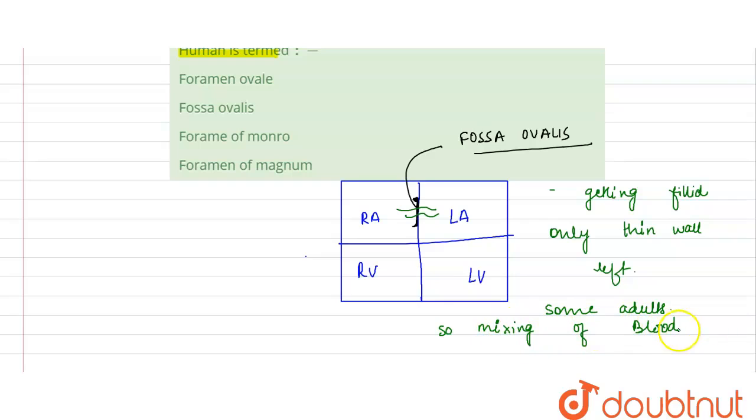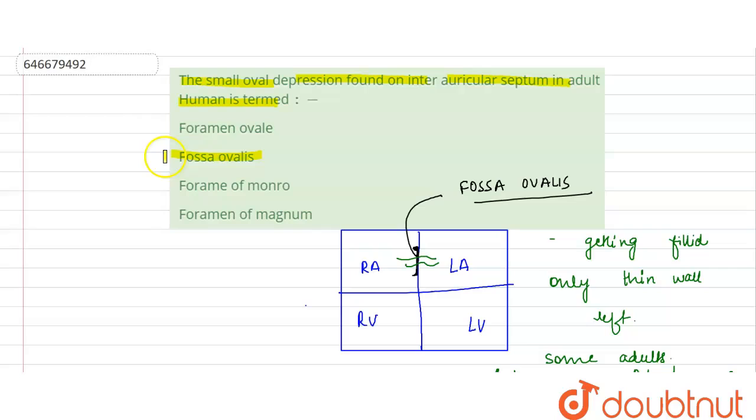So what happens? The mixing of the blood can occur. So the mixing of the blood occurs, and this is called as the fossa ovalis. What about the other options? Foramen ovale?